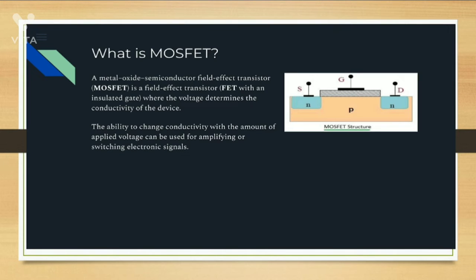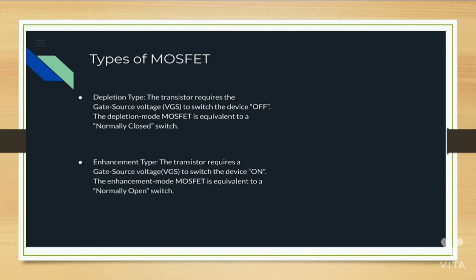What is MOSFET? MOSFET is a Metal Oxide Semiconductor Field Effect Transistor. It is a field effect transistor where the voltage determines the conductivity of the device. The ability to change conductivity with the amount of applied voltage can be used for amplifying or switching electronic signals. The types of MOSFETs are depletion type and enhancement type.